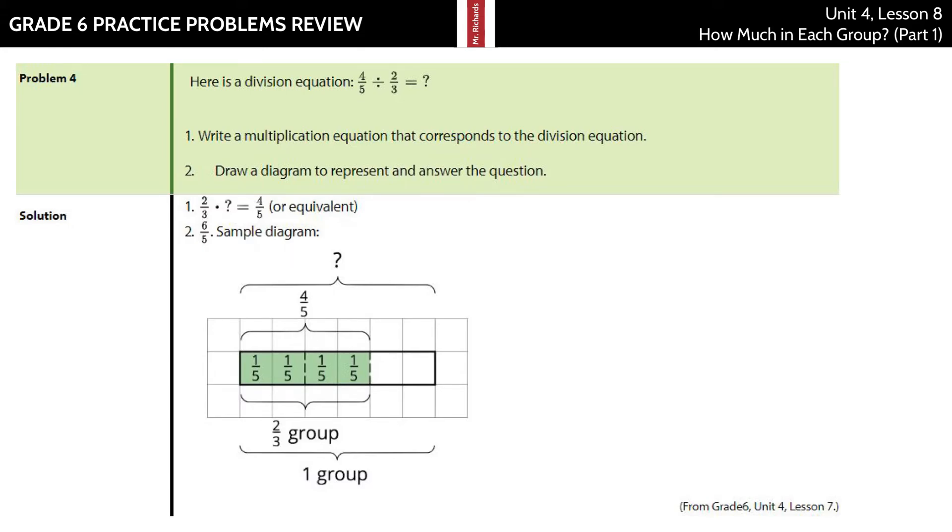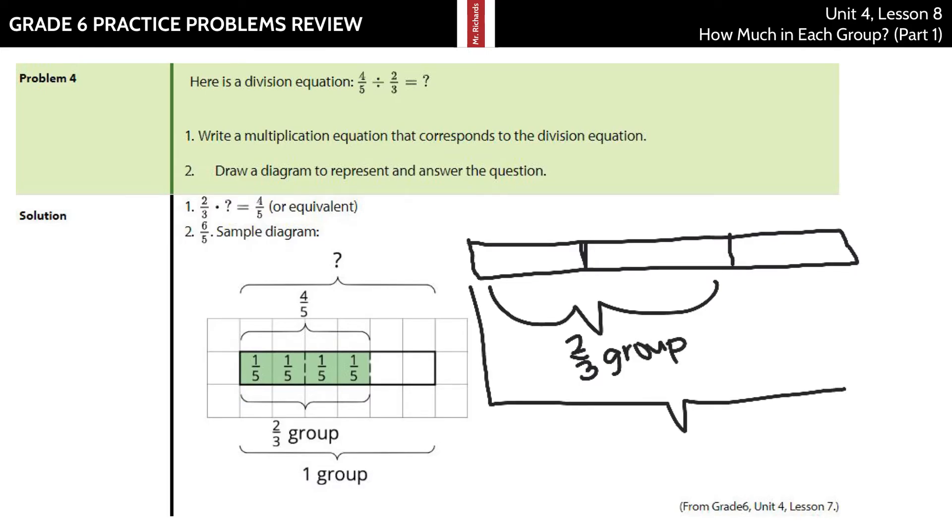As for our bar diagram now, let's draw something out ourselves. Let's first break our diagram here into thirds because this is going to be two-thirds of our group. Where the entire thing is one group. And so we'll be looking here for this two-thirds of a group section.